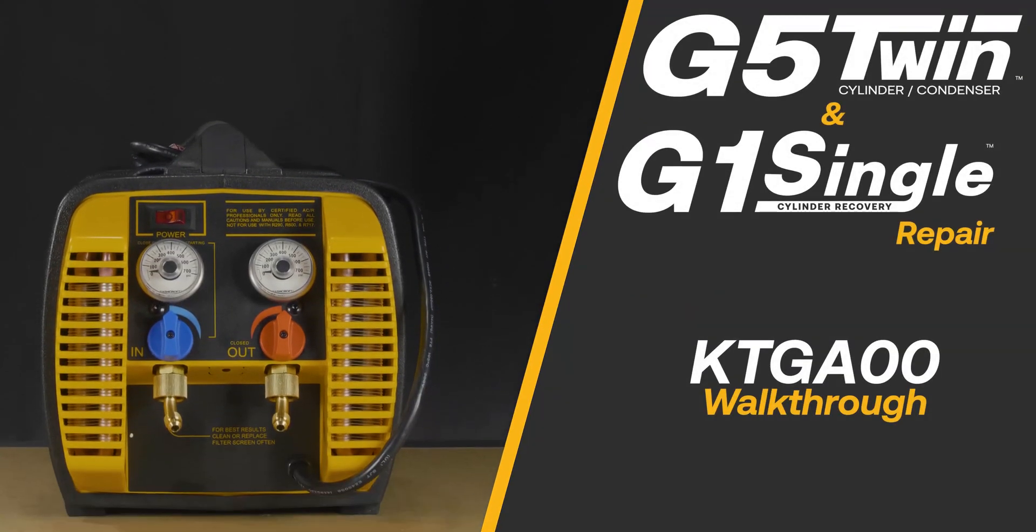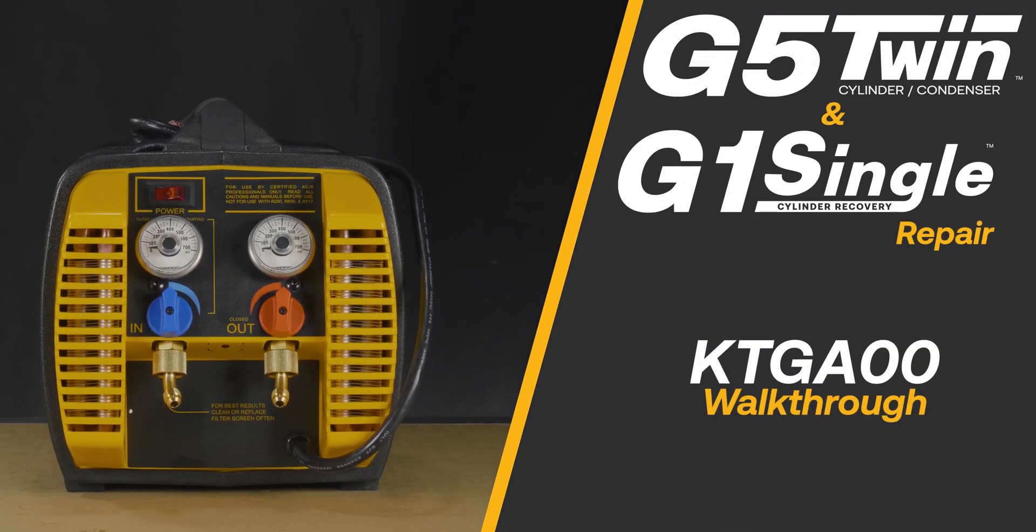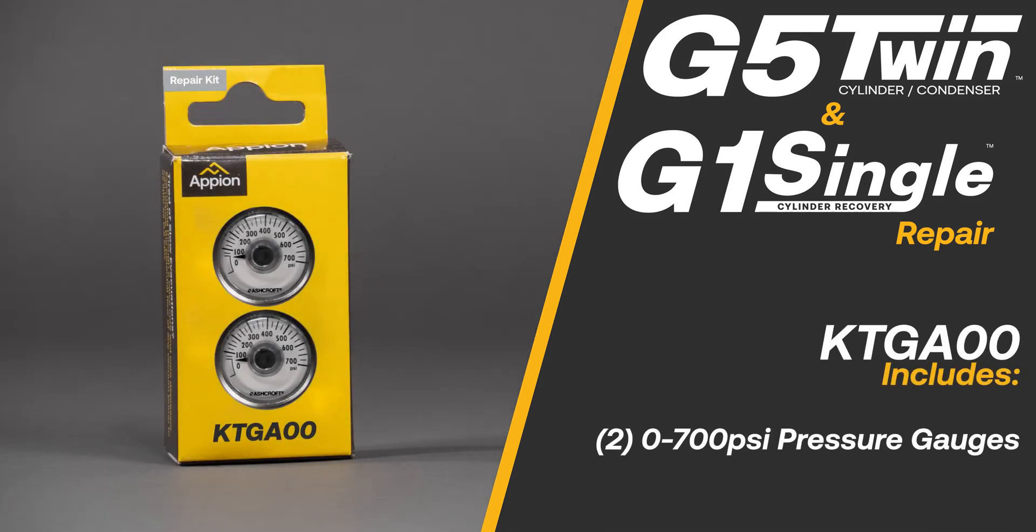The KTG-A00 kit is used to replace the damaged gauges on the G5 Twin or G1 Single. The kit includes two 0-700 PSI pressure gauges that can be used for either side of the machine.